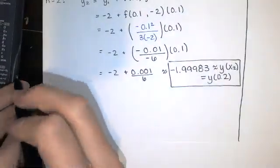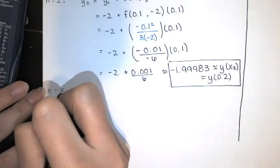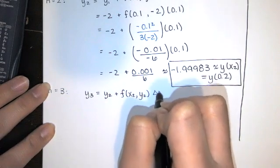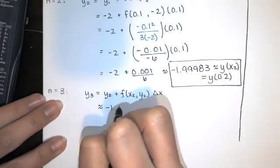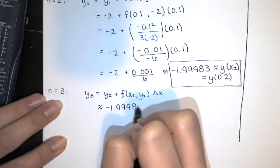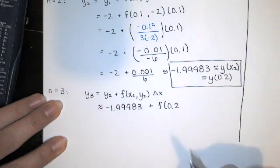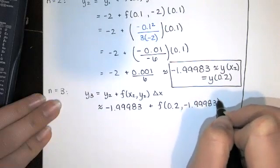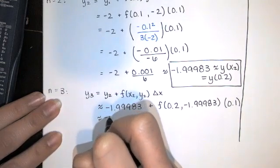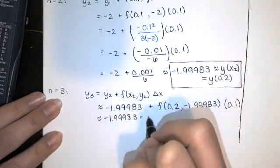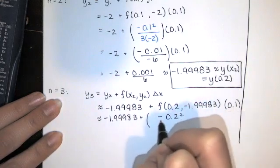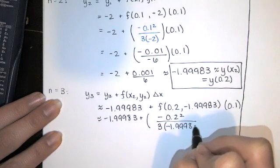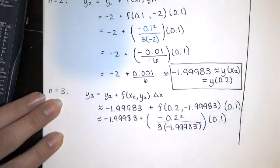Now we do this one more time to approximate y(0.3). y sub 3 equals the last y value plus the slope at the last x-y pair times our change in x. So this is approximately negative 1.99983 plus the slope function evaluated at x = 0.2 and y ≈ -1.99983, multiplied by 0.1. The slope function is negative x squared over 3 times the y value.